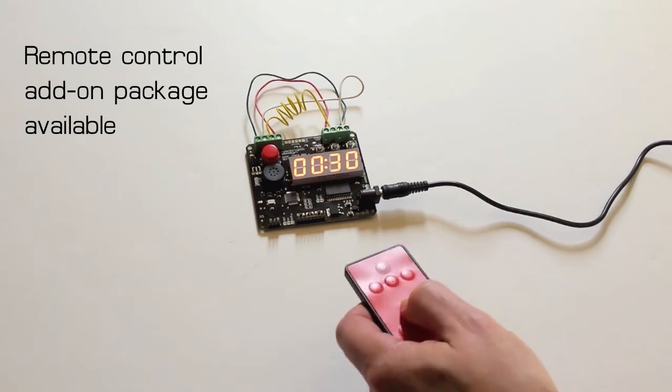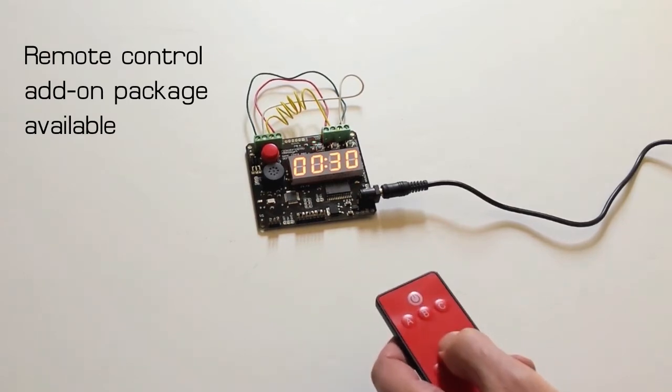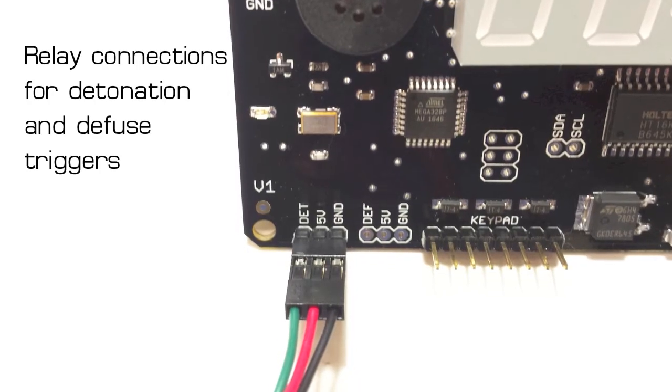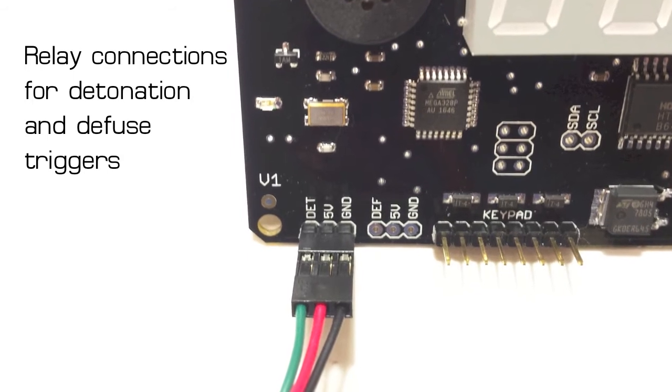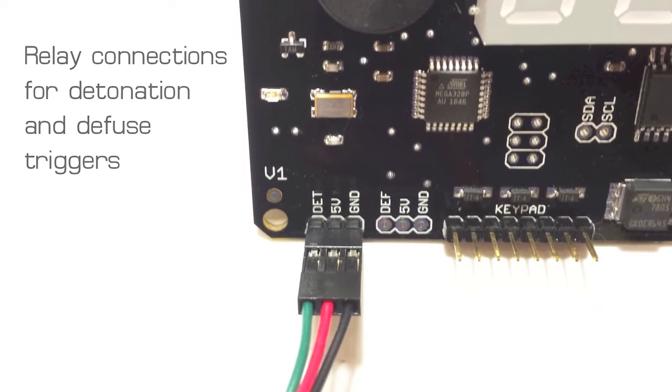With the optional remote, you can control the device from a distance. The Game Timer Pro has connections that will let you trigger relays to activate external devices, like a crazy loud siren.